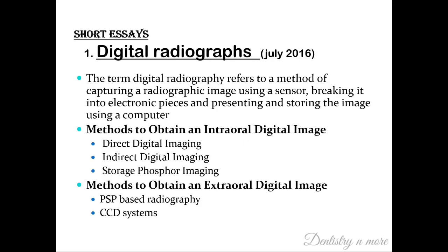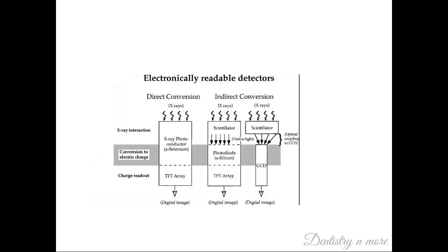The next chapter is on digital radiographs. You can refer to the textbook of oral radiology by White and Pharoah. Digital radiography is a method of capturing a radiographic image using a sensor, converting it into electronic pieces — that is, pixels — and storing the image with the help of a computer. The methods to obtain internal digital images include direct sensors, indirect sensors, and storage phosphor imaging. For external digital images, the methods include photo-stimulatable phosphor plate-based radiography and charge-coupled device systems. Direct and indirect detectors are found in flat panel detectors.